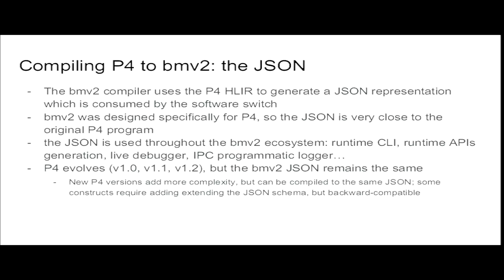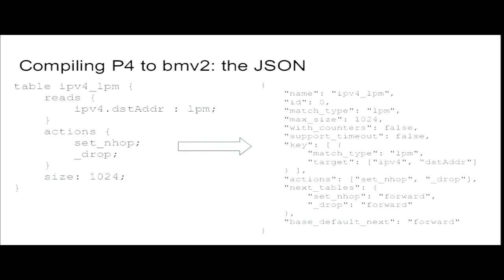As P4 evolves, the JSON schema remains essentially the same. When we add new objects to P4 — in P4 V1.2 we added the concept of extern — we make small changes to the JSON, but we keep the schema backwards-compatible. On the left you have a P4 table, and on the right is the JSON consumed by BMV2 — very close to the P4 program with some attributes removed.